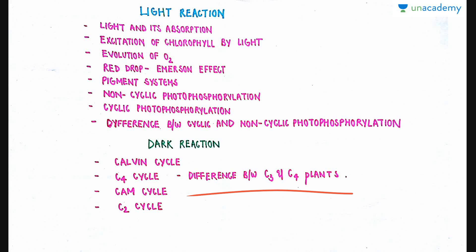Moving towards the first process involved in light reaction — light and its absorption and excitation of chlorophyll by light. While we talk about photosynthesis, it seems to be a very simple process: the plant is utilizing carbon dioxide and water in the presence of light and forming food. But when we look inside the processes involved in photosynthesis, it is quite a complex process — how light is being absorbed by the plant, how it is utilized by the various pigments present in the plant, how the pigments give colors to the plant, and how food is formed.